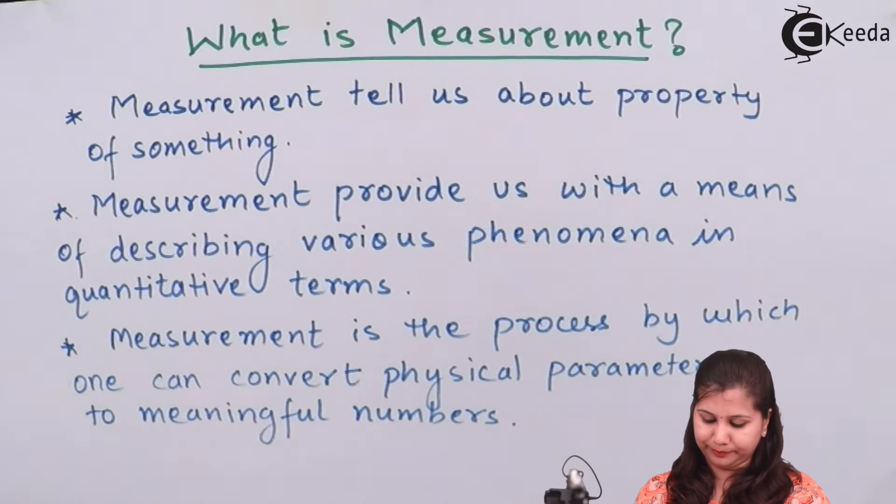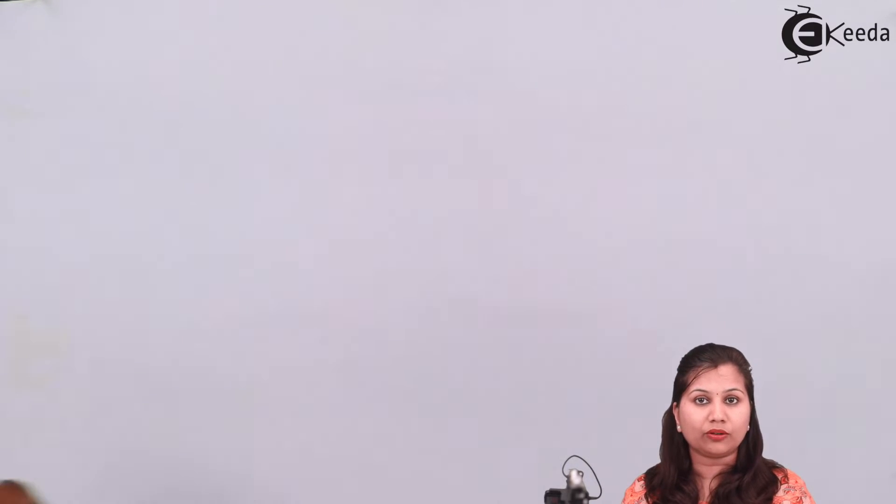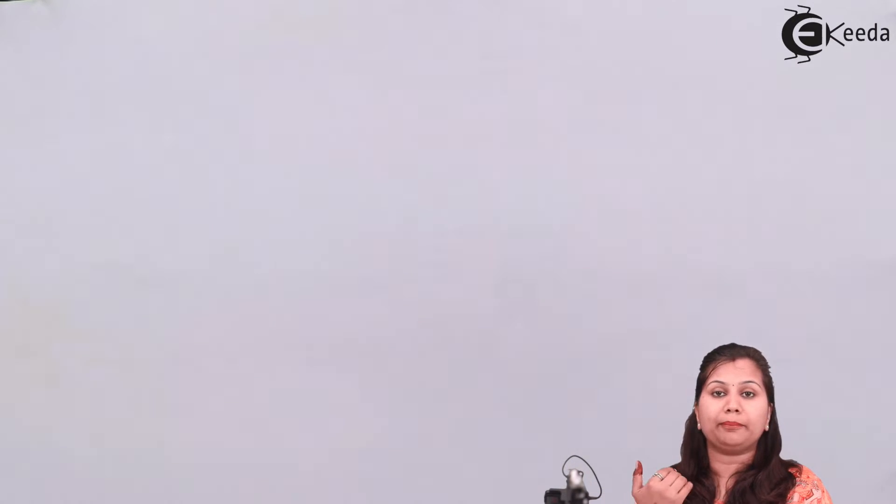Measurements are always performed with the help of some instrument or tool. For example, rulers, stopwatches, thermometers, and weighing machines are all measuring instruments. With a ruler we find length, with a weighing machine we measure weight, with a thermometer we measure temperature, and with a stopwatch we measure time. These instruments are called measuring instruments.